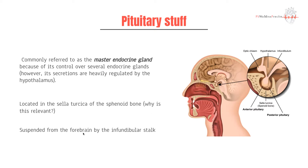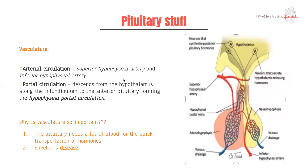The pituitary is suspended from the forebrain by the infundibular stalk, which often leads to the development of two different types of tissue. In terms of its vasculature, it's extremely vascular — it has a superior hypophyseal artery and an inferior hypophyseal artery, and then it has its own entire portal circulation as well.